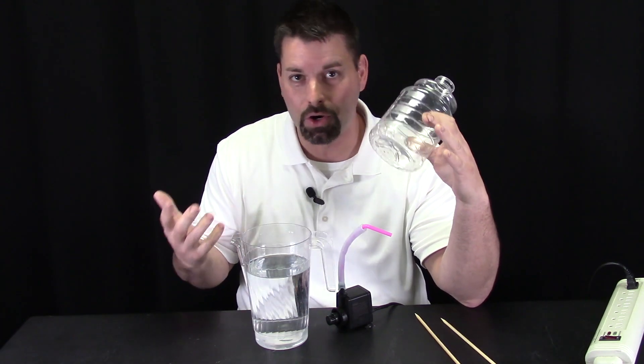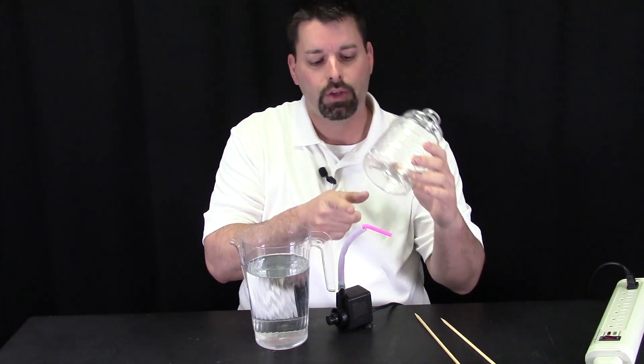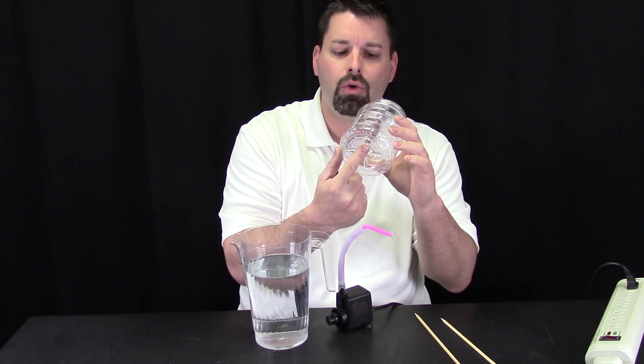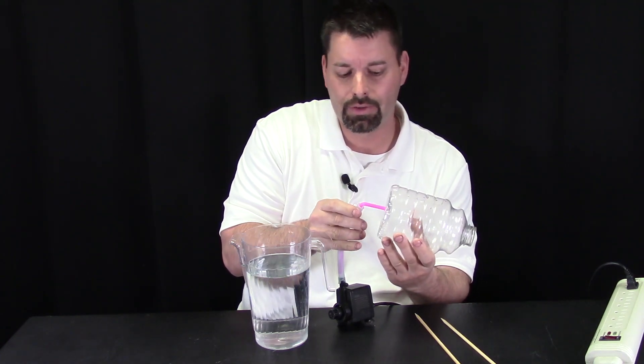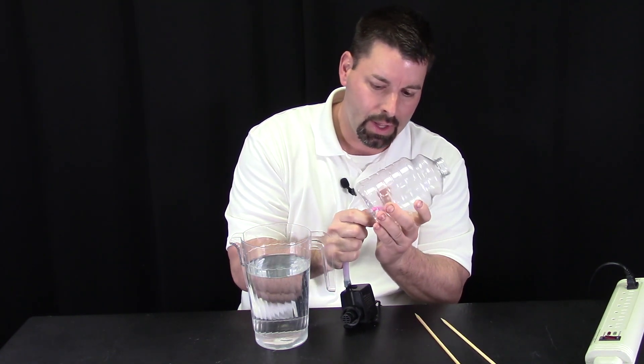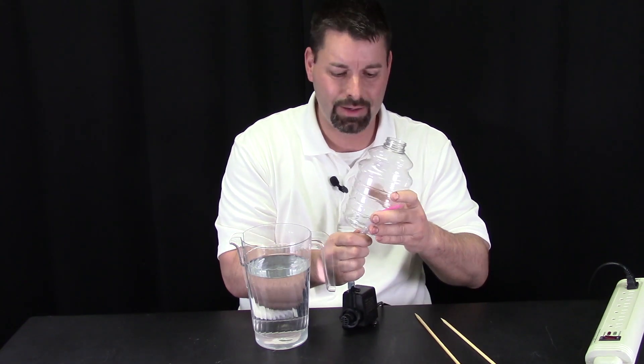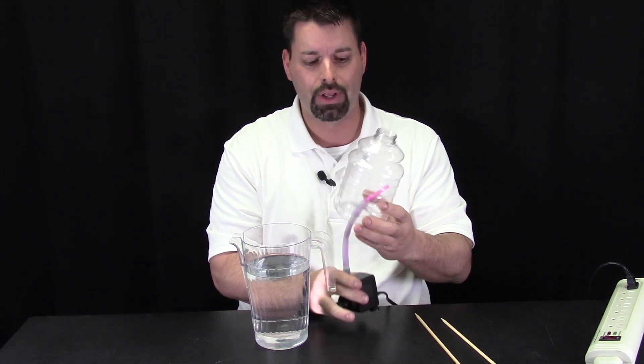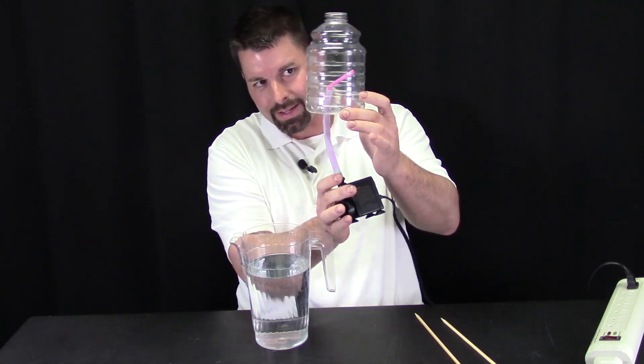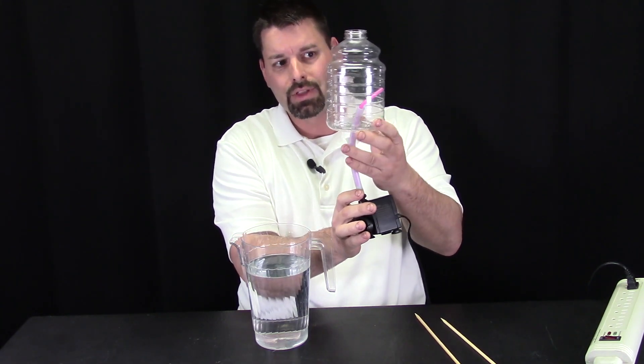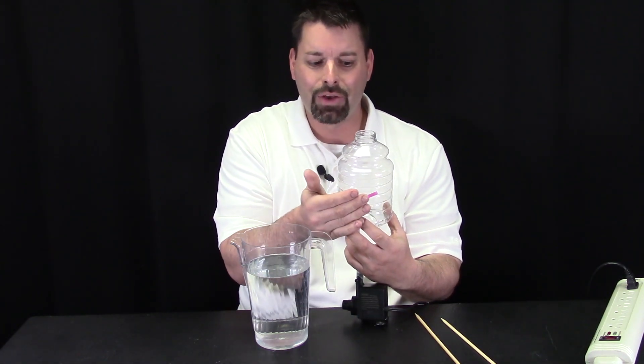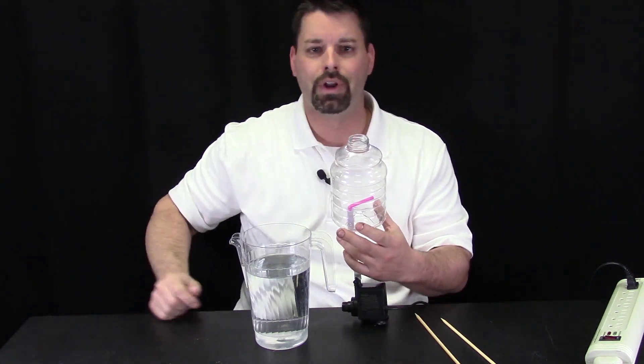So let's assemble this and see if we can get our tornado to work. I'm going to take the tubing and put it in the hole that's not in the center. You want the hole to be kind of snug, but it's okay if it leaks a little bit. Now it's important to realize that I can spin the bottle so that the straw is angled right against the side of the bottle, and that's going to help create the spin to get our tornado.